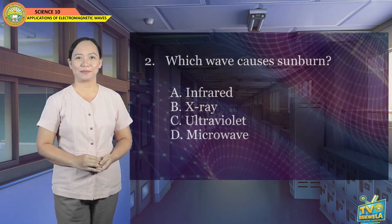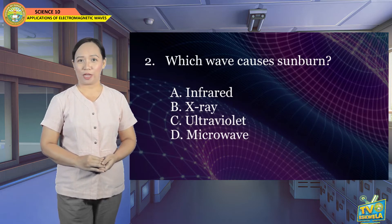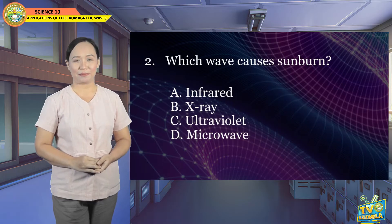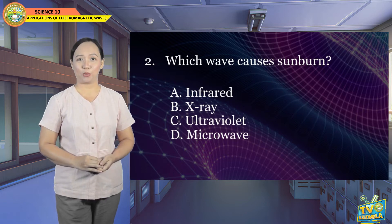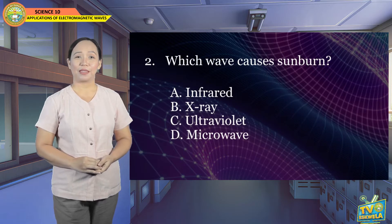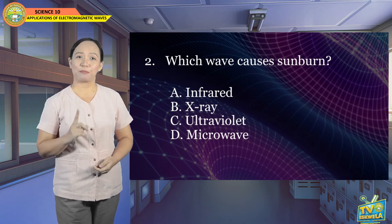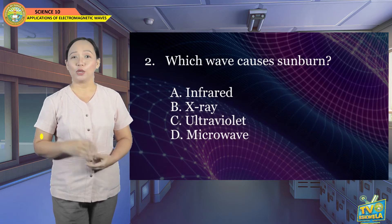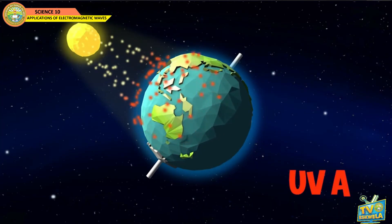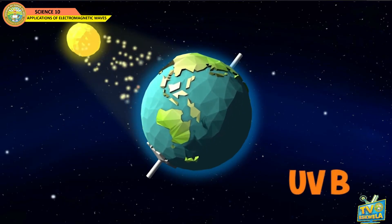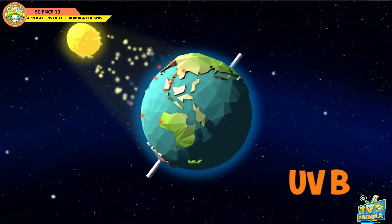Number 2: Which wave causes sunburn? A. Infrared, B. X-ray, C. Ultraviolet, D. Microwave. The answer is letter C — Ultraviolet or UV. There are two types of UV: UVA and UVB. UVA has a longer wavelength and is associated with skin aging, while UVB has a shorter wavelength and is associated with skin burning or sunburn.